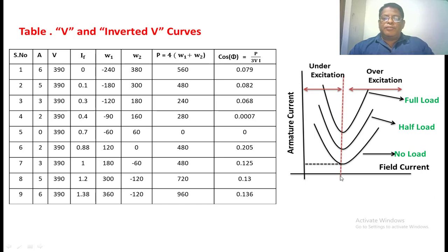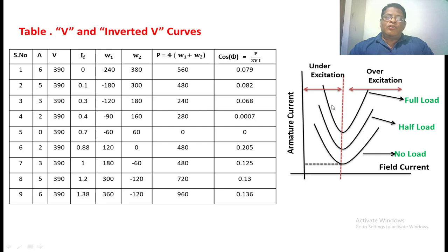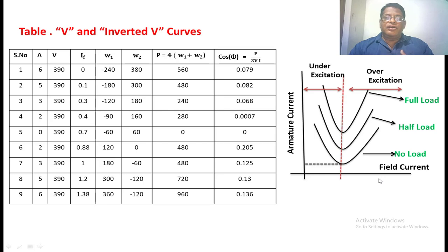The red dotted line represents unity power factor. Before this line is the under-excitation region, and above this line is the over-excitation region. In under-excitation mode, when we apply the field current below the dotted line, the motor operates at a lagging power factor — meaning the motor is absorbing reactive power. If we maintain the field current of the motor above this dotted line, the motor operates at a leading power factor and the synchronous motor is able to supply reactive power to the network.